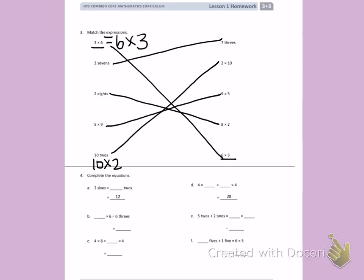Number 4, Complete the Equations. Part A, I have 2 6s. Using the commutative property, I also can have 6 2s, which gives me a total of 12.